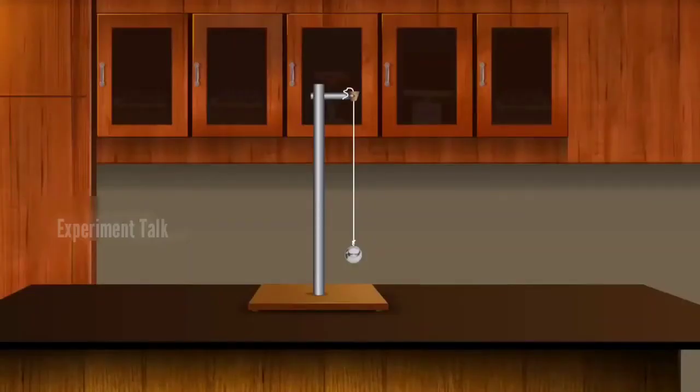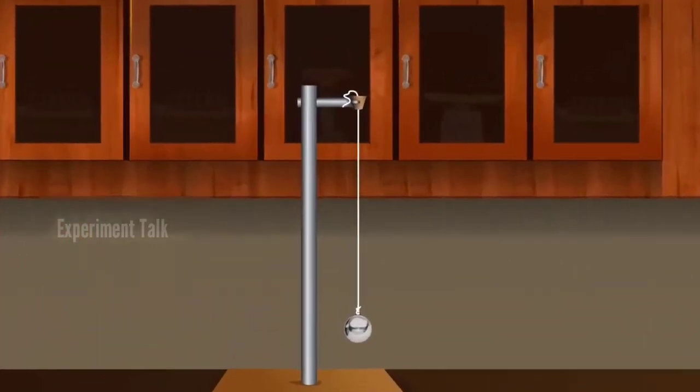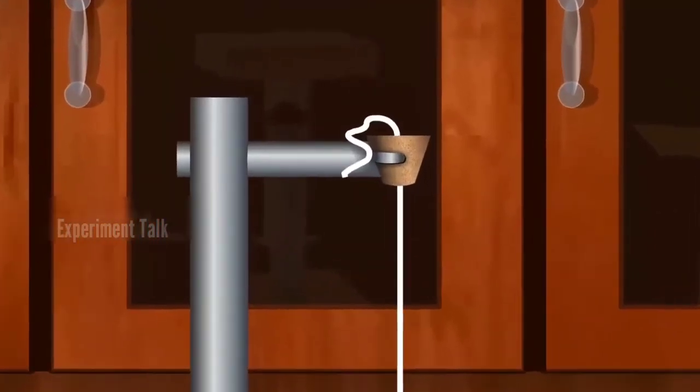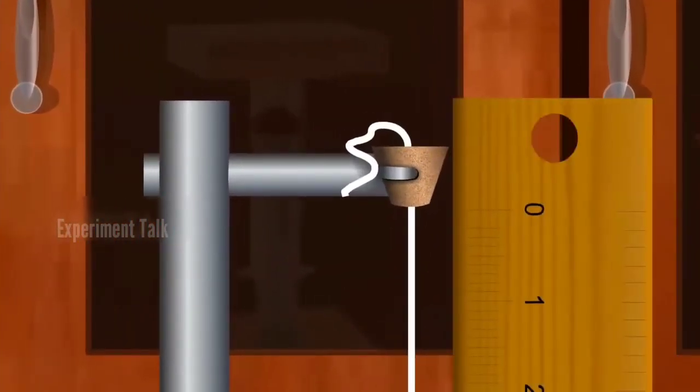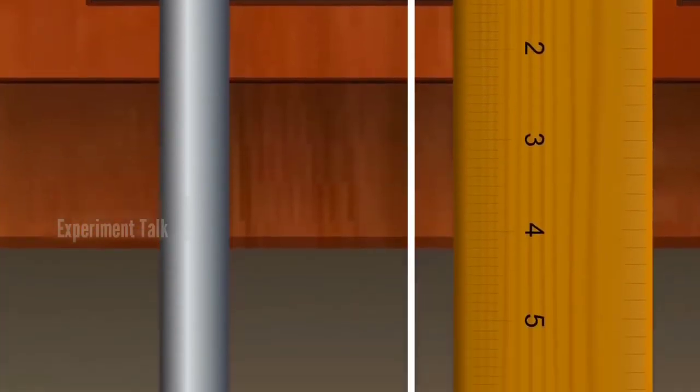Consider a rigid support and hang an ideal string. Ideal string means no mass, no weight, no inertia, no tension, perfectly inelastic. Measure the length of the string, starting from the top to the middle of the bob.